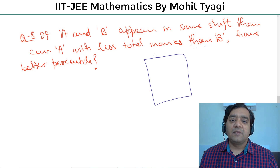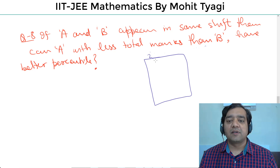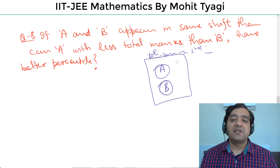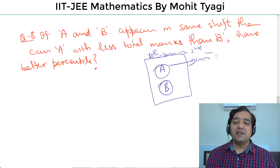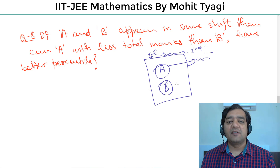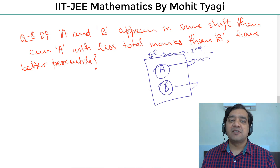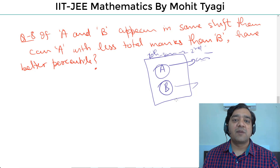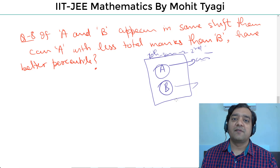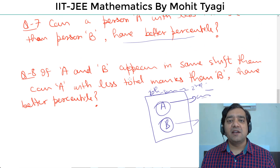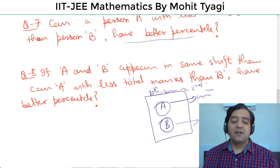अगर मालो 10th January second shift में A और B दोनों appeared हुए, तो इसमें जिसके marks ज़्यादा होंगे उसकी percentile definitely ज़्यादा होगी। एक shift के अंदर कोई normalization नहीं है क्योंकि दोनों को paper same मिला है। कुछ बच्चों ने comment में लिखा है कि मेरी shift में एक बच्चे के मेरे से marks कम थे पर percentile ज़्यादा हो रहा है — यह possible नहीं है।